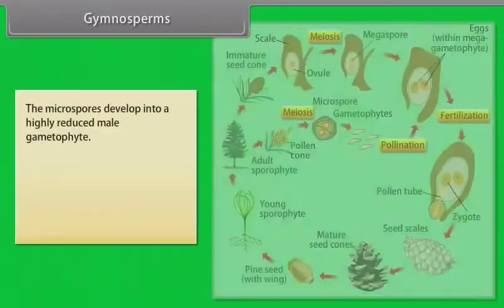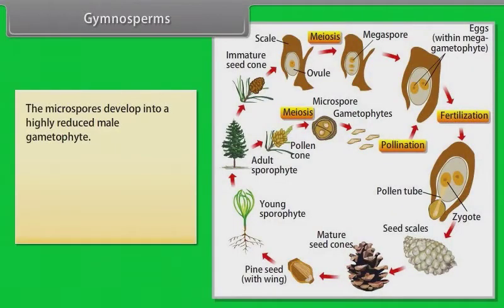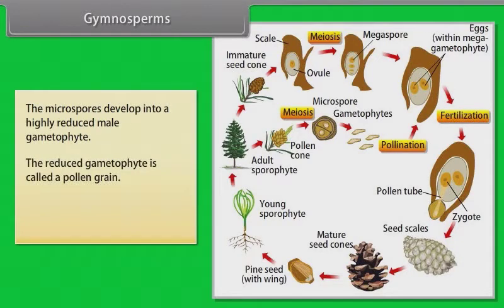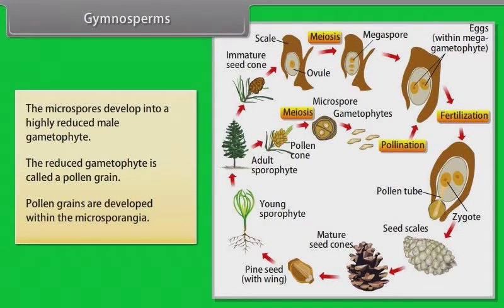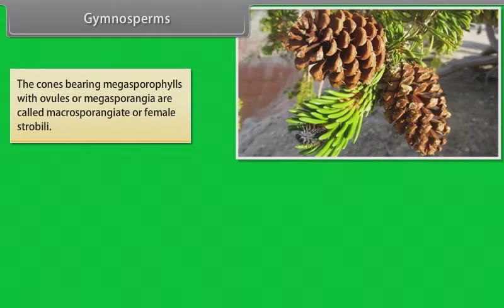The microspores develop into a highly reduced male gametophyte. The reduced gametophyte is called a pollen grain. Pollen grains are developed within the microsporangia. The cones bearing megasporophylls with ovules or megasporangia are called macrosporangiate or female strobili.